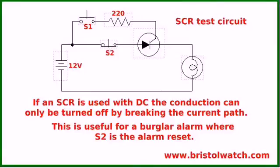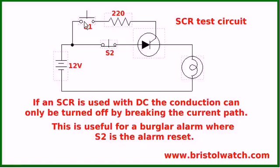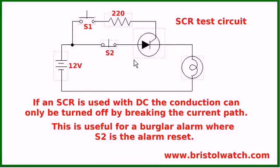Now we have an SCR connected to a DC circuit. That's the anode, that's the cathode, this is the gate, and it's being triggered from the anode side again. If I press S1, the light bulb will turn on. But if I release S1, it will stay on. This is one of the problems you're going to run into with both Triacs and SCRs, since Triacs are built from SCRs. The only way to cut the light bulb off is to press S2, which will break the current path and turn off the SCR.